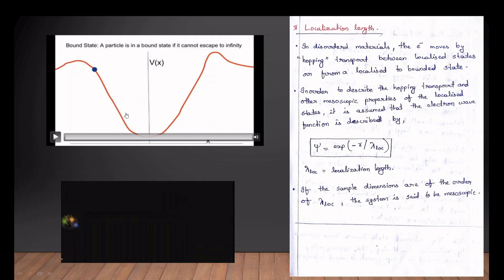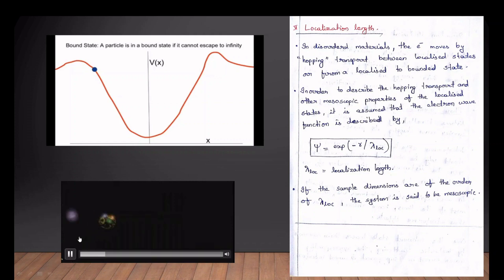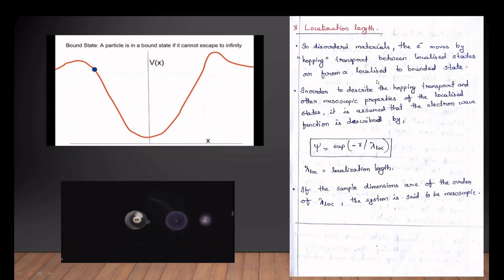In that region, every electron has a spread of the electron — that is the localized state. If you describe the localized state, we describe the characteristics. For the localized state, it is called hopping transport.